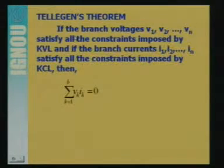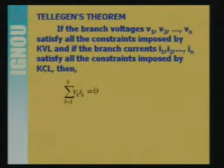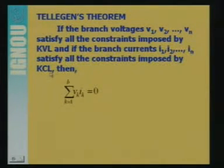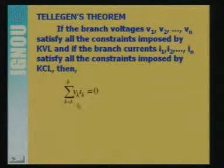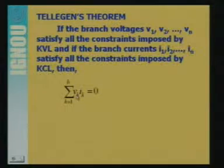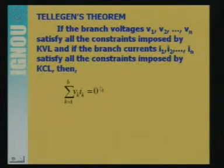Now let us see Tellegen's theorem. This theorem is based on Kirchhoff's current law and Kirchhoff's voltage law. If the branch voltages V1, V2 through Vn satisfy all constraints imposed by KVL, and the branch currents I1, I2 through In satisfy all constraints imposed by KCL, then Tellegen's theorem states that the summation from k equals 1 to B of Vk times Ik equals zero — the product of branch voltage and branch current summed over all branches equals zero.